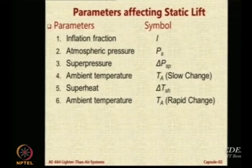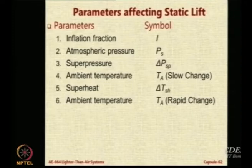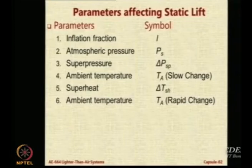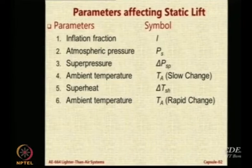The effect of variation of these 6 parameters: the inflation fraction, which represents the ratio of the lifting gas inside the envelope upon the total envelope volume. The inflation fraction changes when the airship gains or loses altitude because the ambient temperature and pressure will change, and with that there is a direct link to the inflation fraction. The atmospheric pressure comes directly in the numerator of the net static lift calculation, so when PS changes, there will be a change in the inflation fraction and also in the lift.